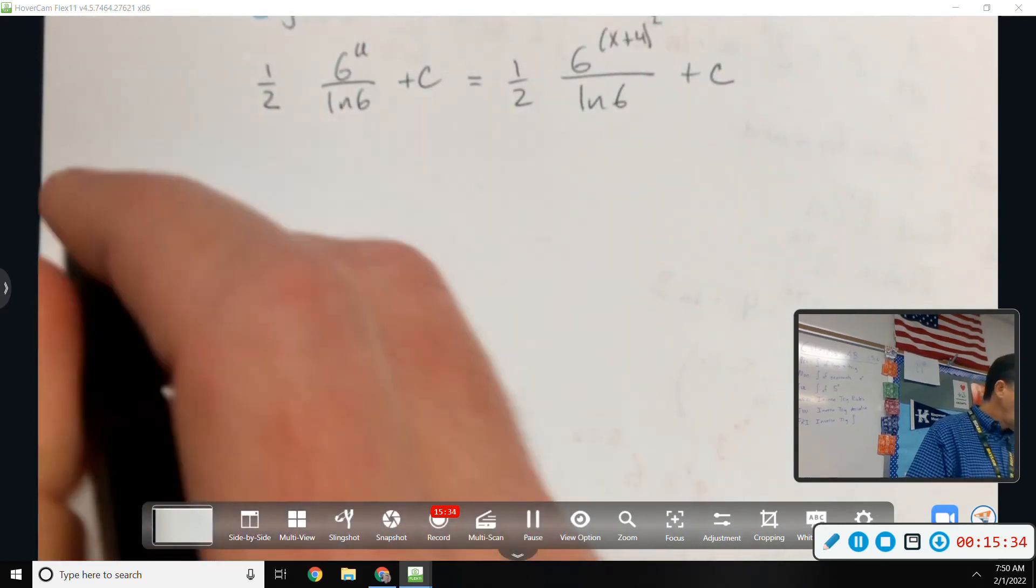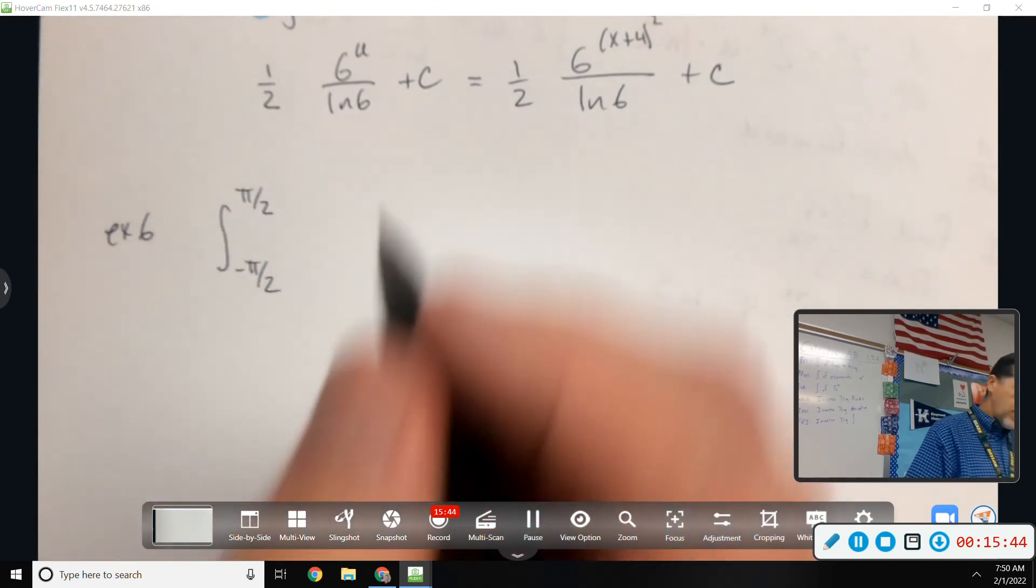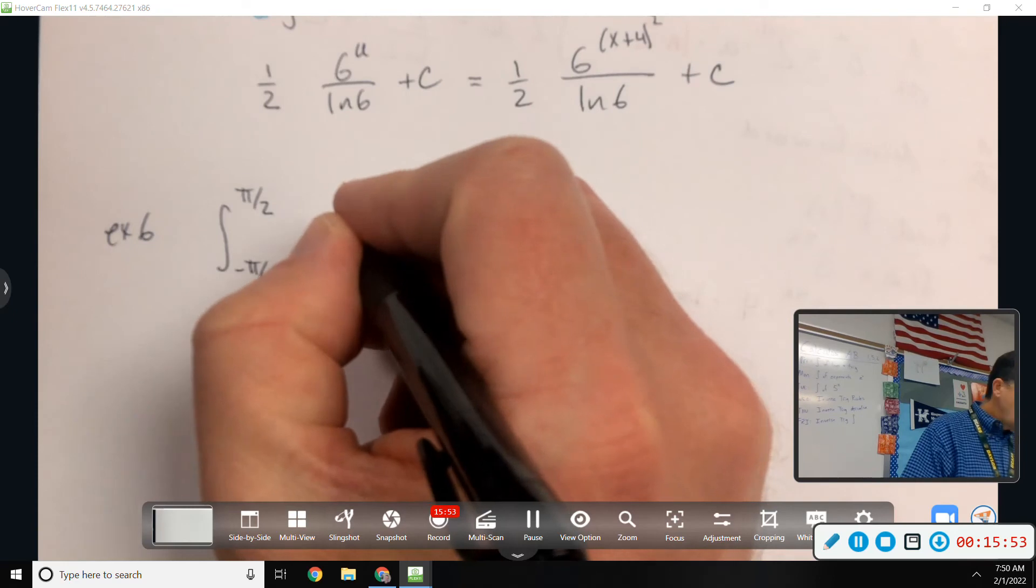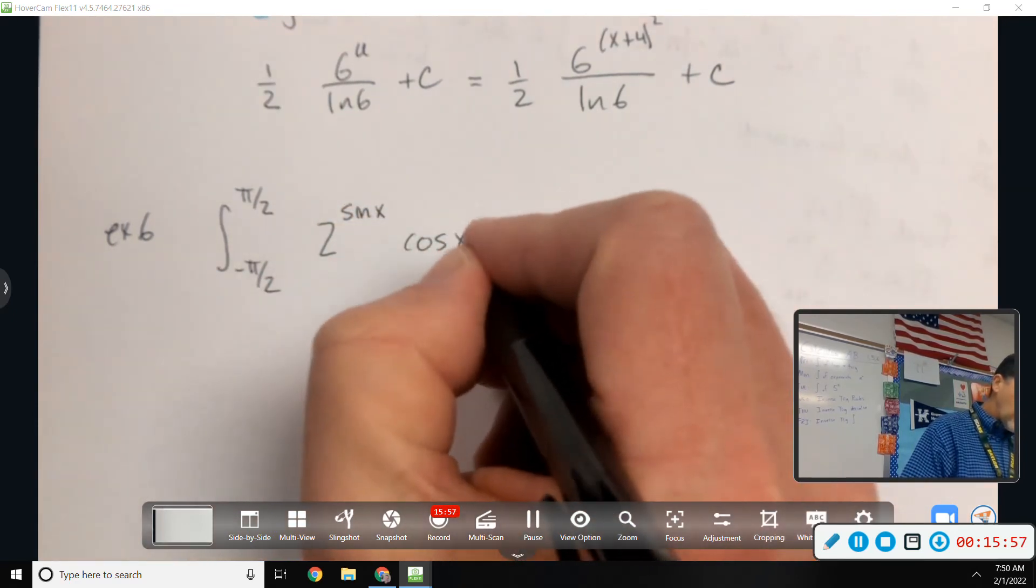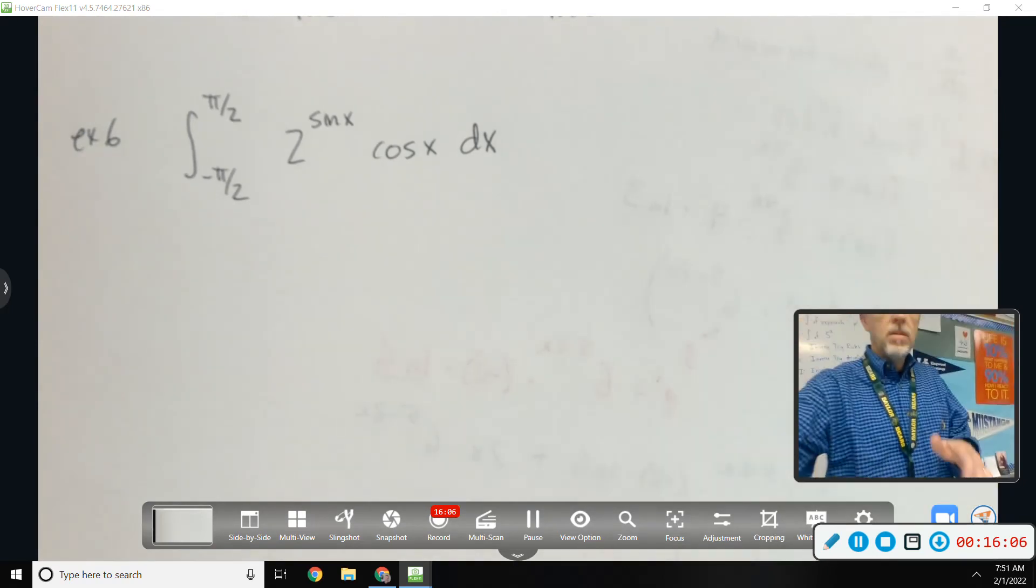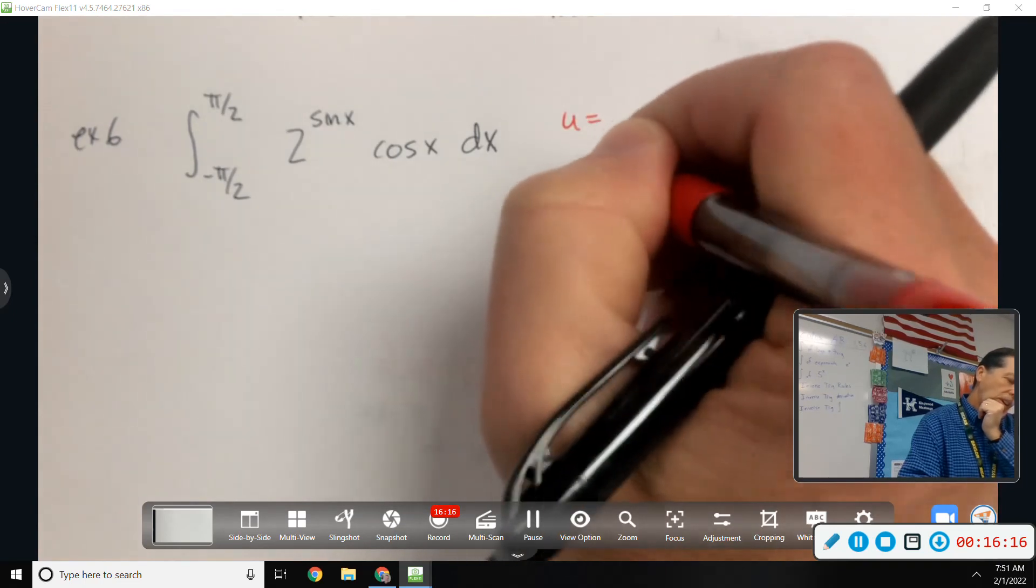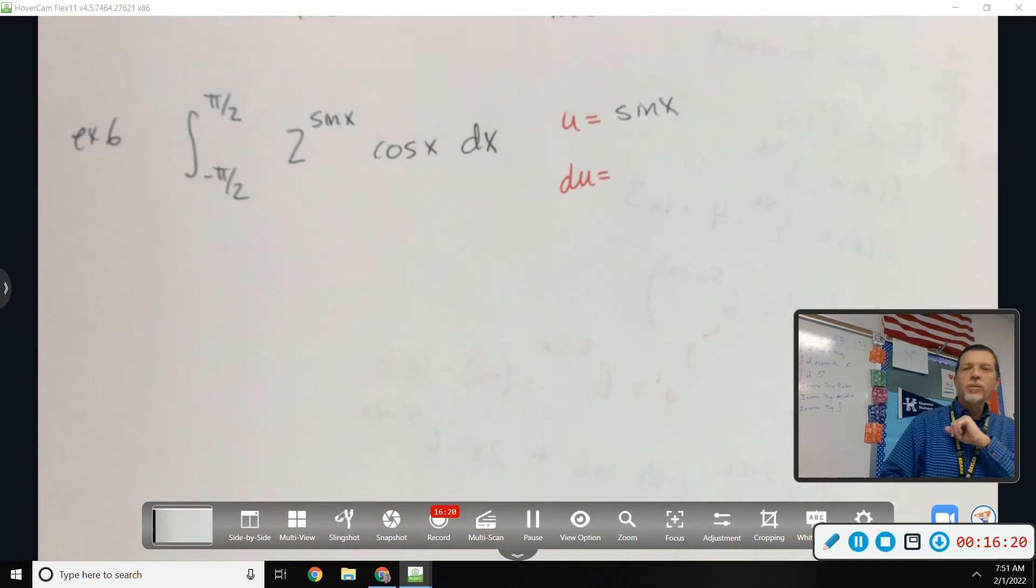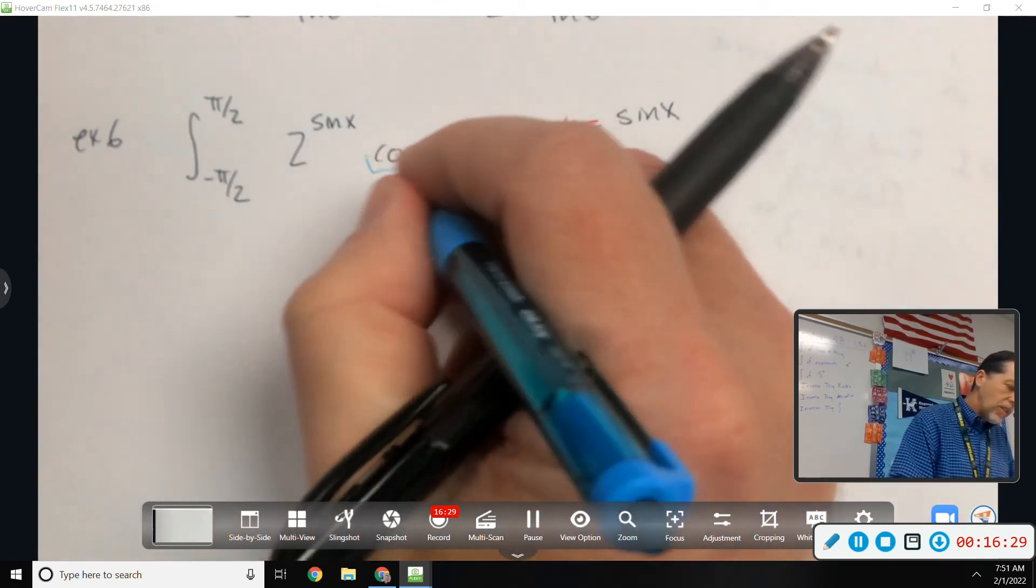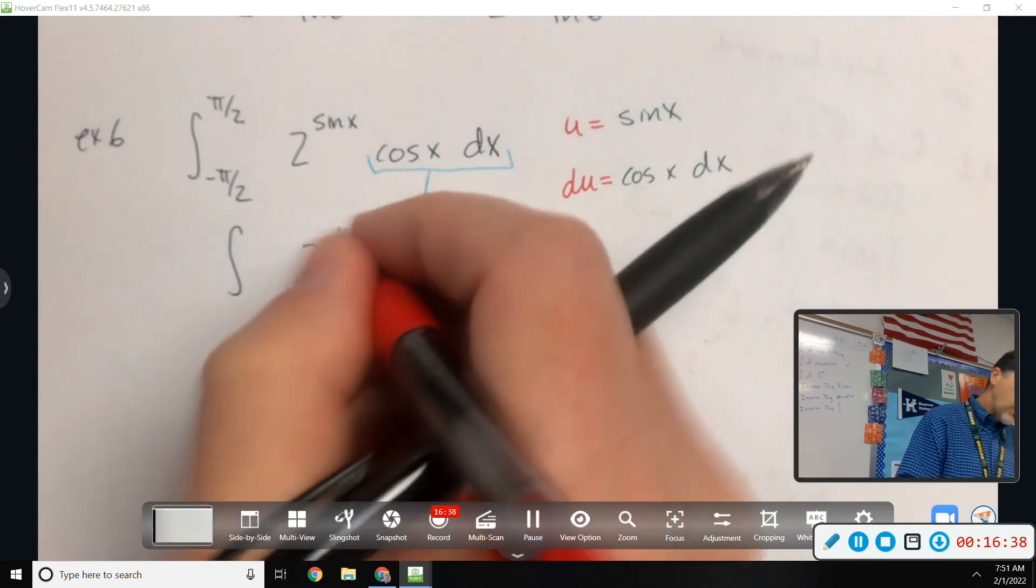Let's do one more. The integral from negative pi over 2 to pi over 2, so already this one's a little different because we've got limits on there but we know that just means at the very end we'll do the top one minus the bottom one. 2 to the sine X times cosine of X DX. Thoughts for what U should be? Sine X because, well two reasons. One, we usually pick the exponent to be U and the second reason is the derivative of sine is cosine and we have that right there. So that's about as straightforward a U substitution as we could hope for. Integral of 2 to the U DU.